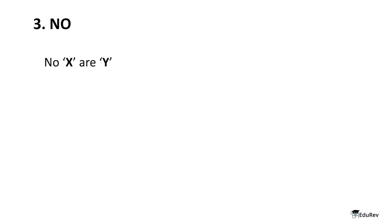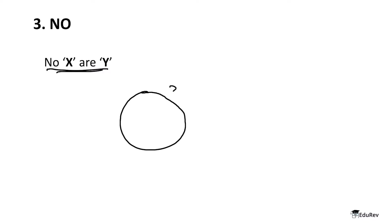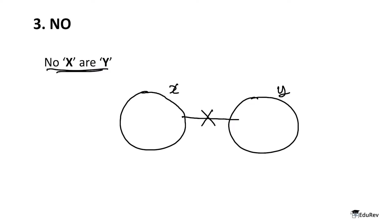Now let's look at the third statement, which is 'no X are Y'. The third statement is very easy because for 'no X are Y', there is no minimum overlapping diagram — the diagram is very simple. There is X, here is Y, and there is no overlapping. So this is the diagram for 'no X are Y'.